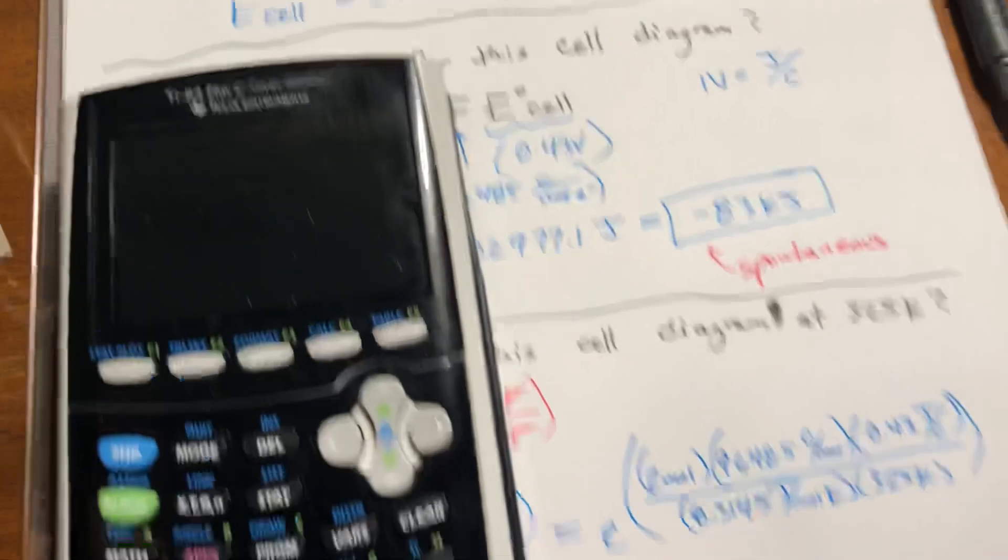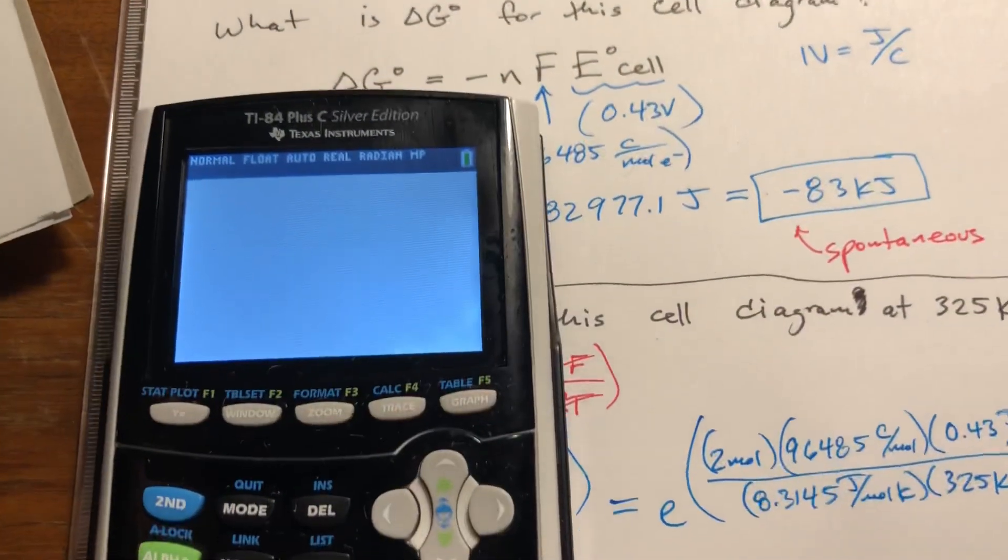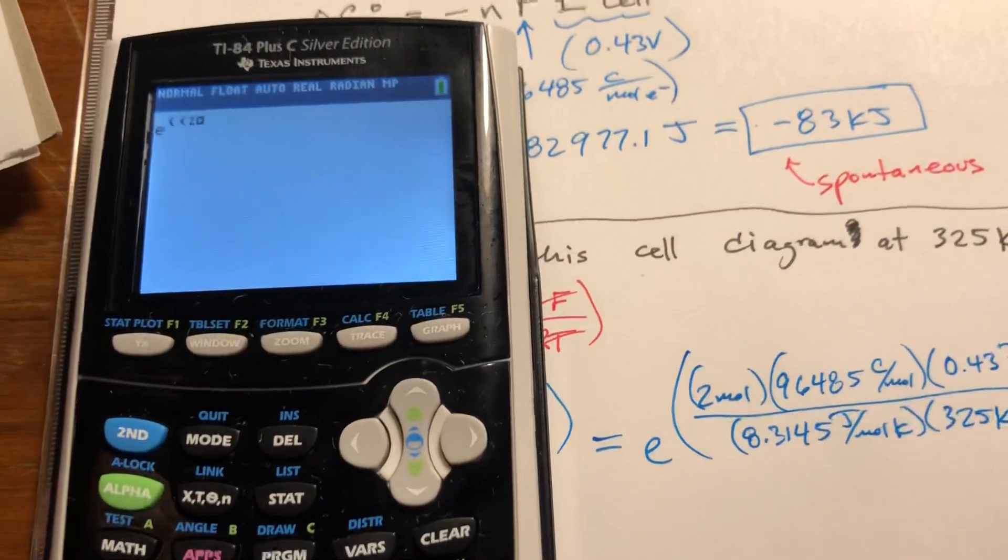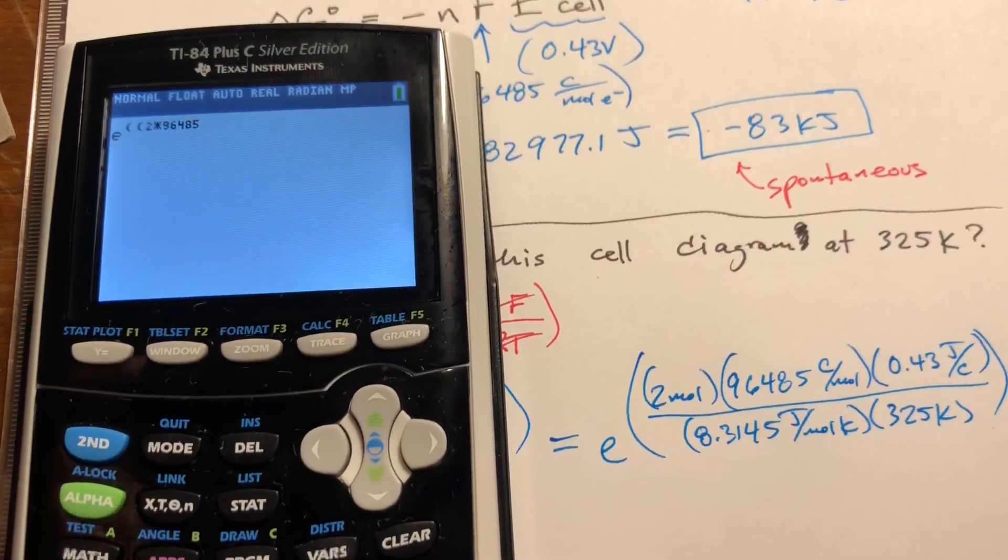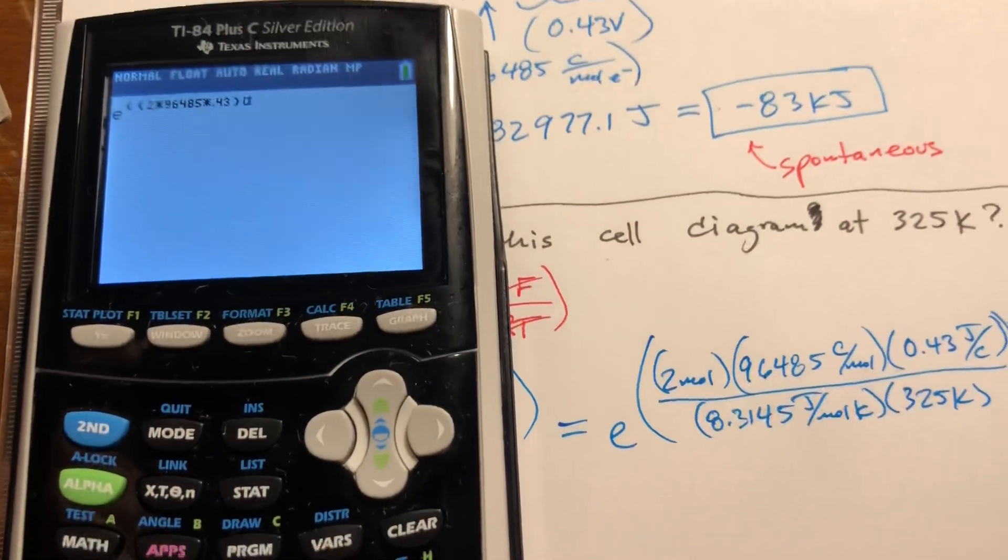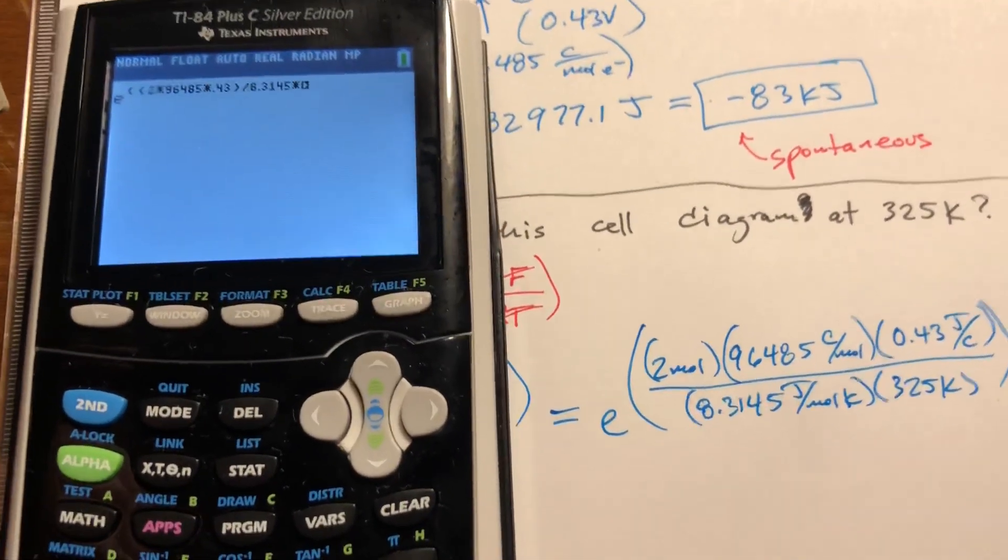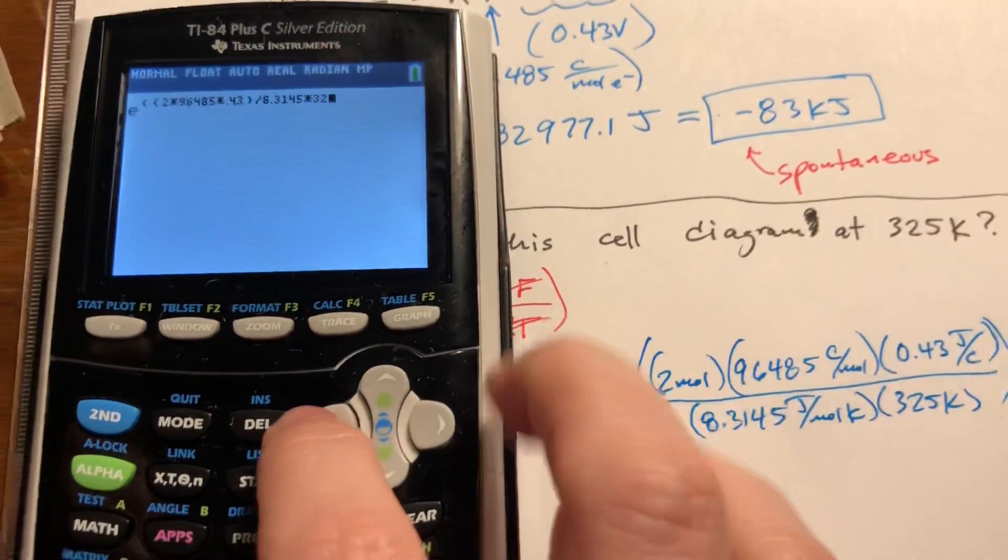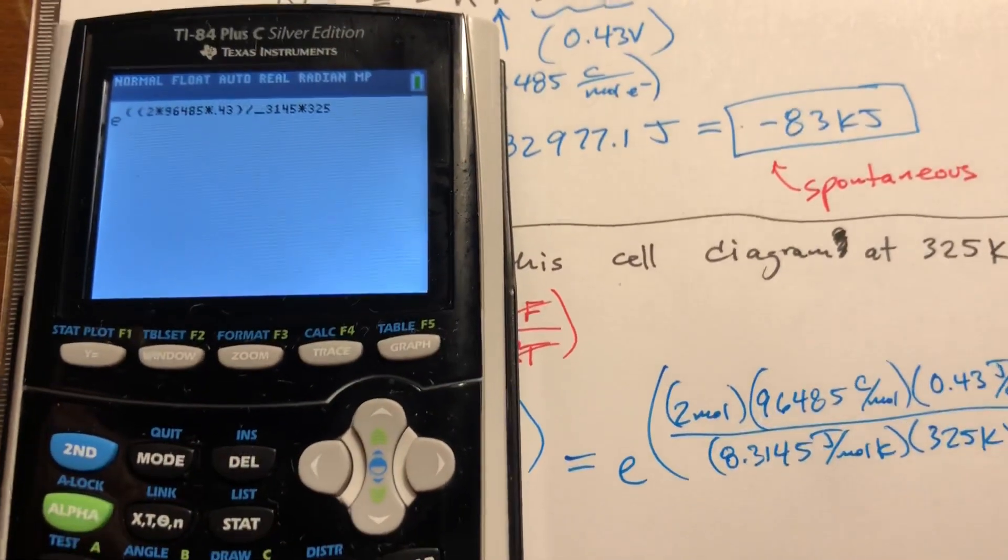So typing this in is going to be a pain. What I'm going to do is hit E to the X and just be really careful with my parentheses. 2 times 96,485 times 0.43. That's all on the top, divided by 8.3145 times 325. I forgot a parenthesis there too. 2nd insert parenthesis.